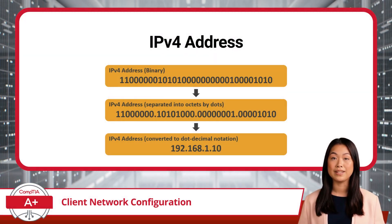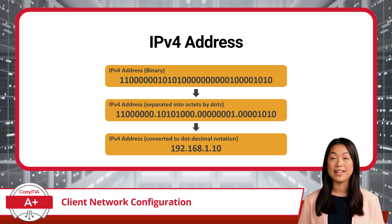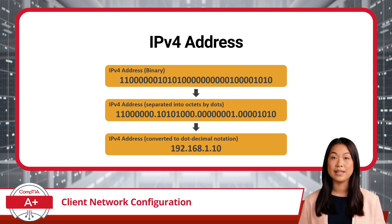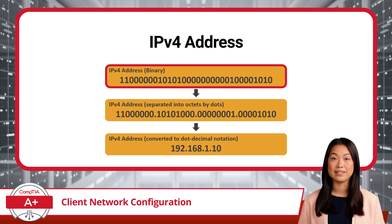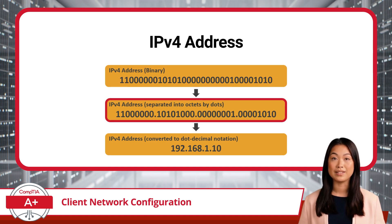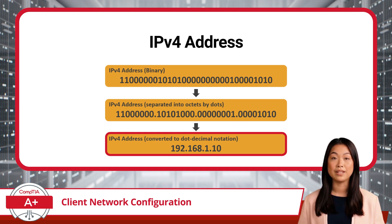Currently there are two versions of IP addresses in use: IPv4 and IPv6. IPv4, which stands for Internet Protocol Version 4, is the older and more widely adopted version. IPv4 addresses use dot decimal notation — a way of displaying a big number in manageable chunks. Each address is 32 binary digits long, grouped into 4 sets of 8 binary digits, also known as octets, converted to decimal values. Each octet can range from 0 to 255, providing over 4.2 billion numerical combinations.